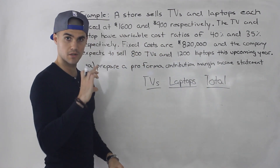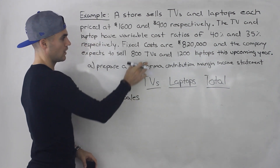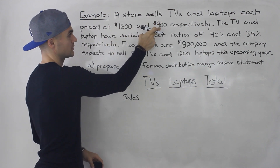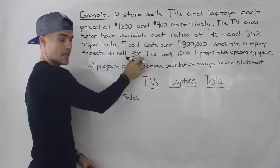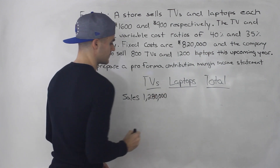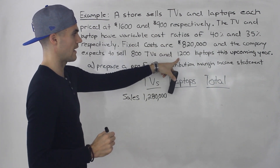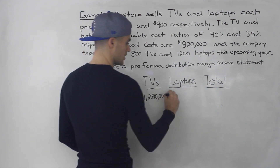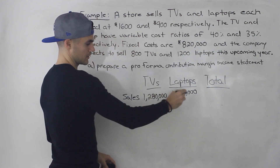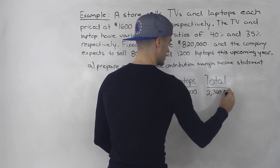With a contribution margin income statement, we start with sales. For the TVs, they're selling 800 TVs each priced at $1,600, so 1,600 times 800 gives us $1,280,000 in sales for the TV portion. For laptops, 900 times 1,200 gives us $1,080,000. Totaling these up gives $2,360,000.